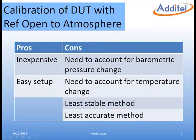In this method, the setup is very simple and the equipment used is relatively inexpensive. However, this method has some considerable disadvantages. First, because the low or reference ports are open to atmosphere, the change in barometric pressure needs to be accounted for. Depending on the calibration environment, this error can be significant. The influence of temperature effects also presents a challenge with this method. This is the least accurate method of calibration.